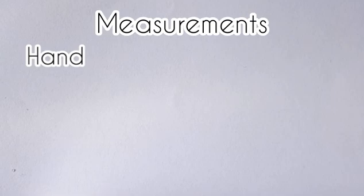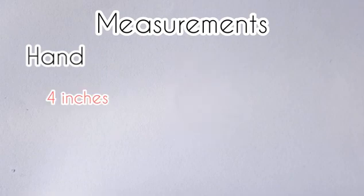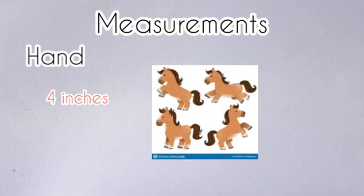After the inch, let's have the hand. A hand was approximately five inches or five digits - fingers across. Today a hand is four inches and is used to measure horses from the ground to the horse's shoulder.